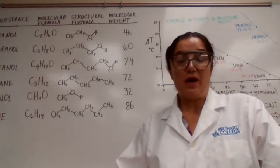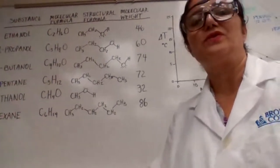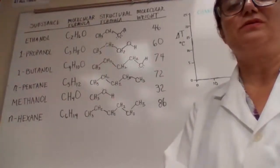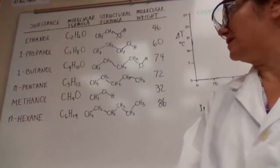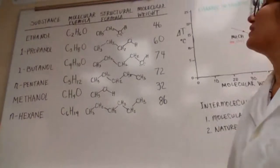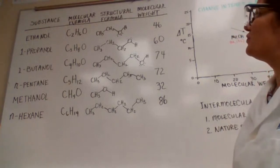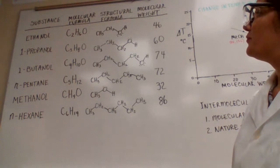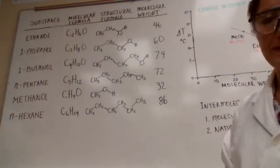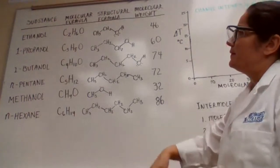There is some information on the board which you might need for this experiment. You have the molecular formula and structural formula for ethanol, propanol, methanol, butanol, hexane, and pentane. You also have the molecular weight for these compounds.